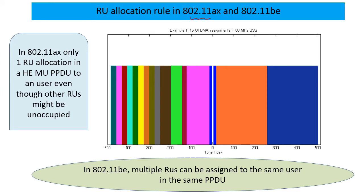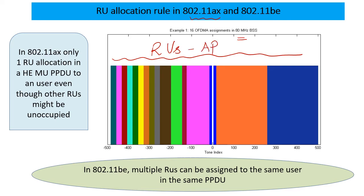802.11ax or Wi-Fi 6 allowed us to break a bandwidth — in this case an example of an 80 MHz bandwidth — into RUs, and the scheduler, which is the access point, is able to break it up in a variety of ways according to its own proprietary reading of the scenario. But one of the constraints is that for a particular PPDU, we have only one RU allocation for a user. So if I gave the user this particular RU, there are no other RUs in this PPDU that can be given for that user.